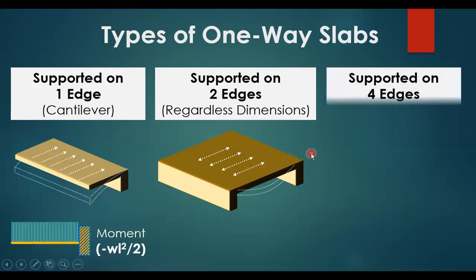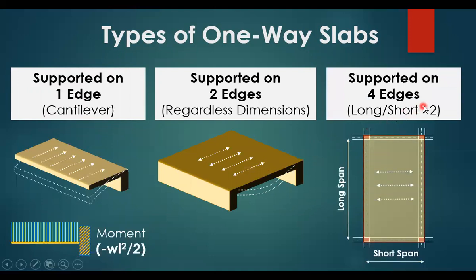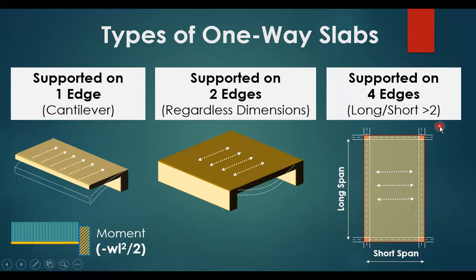The most common case is when you have a slab supported on four edges. This slab can be classified as one-way or two-way based on the dimensions. It is classified as one-way if the longest span divided by the short span is greater than two.